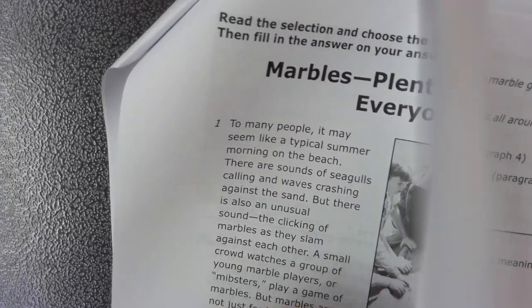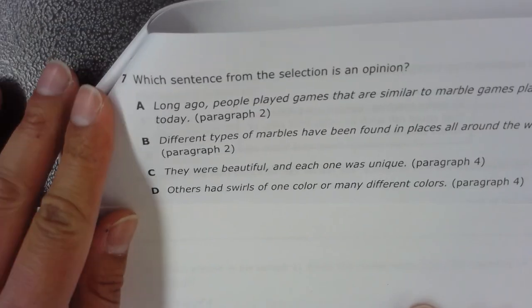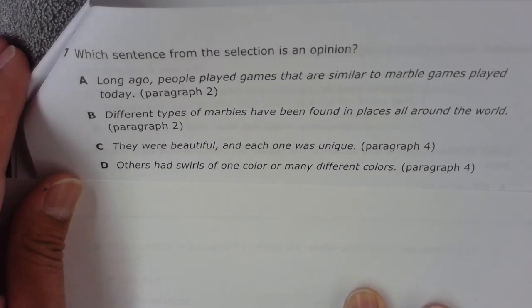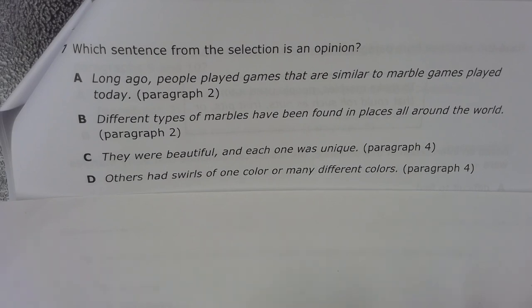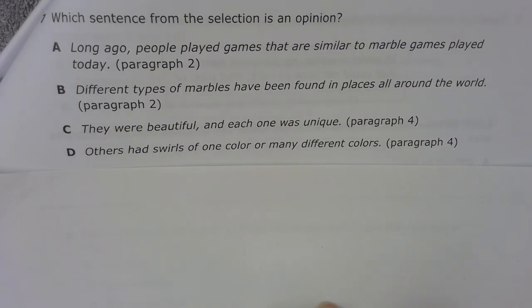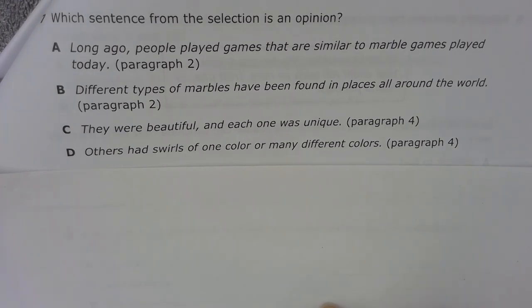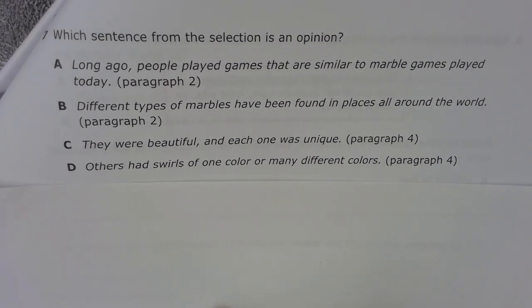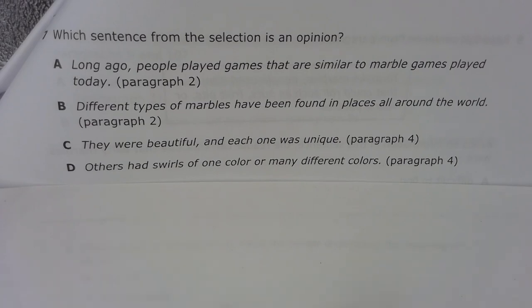Now we're looking at the second passage, number 7. Which sentence from the selection is an opinion? A. Long ago, people played games that are similar to marble games played today. Paragraph 2. B. Different types of marbles have been found in places all around the world. Paragraph 2. C. They were beautiful and each one was unique. Paragraph 4. D. Others had swirls of one color or many different colors. Paragraph 4.